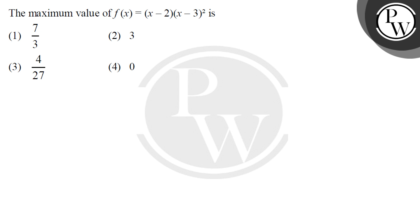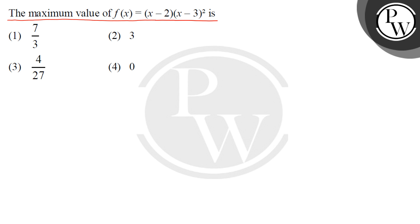Hello, so let's read this question. The question is: the maximum value of the function f(x) = (x - 2)(x - 3)² is which of the following values? So our main function is f(x) = (x - 2)(x - 3)².